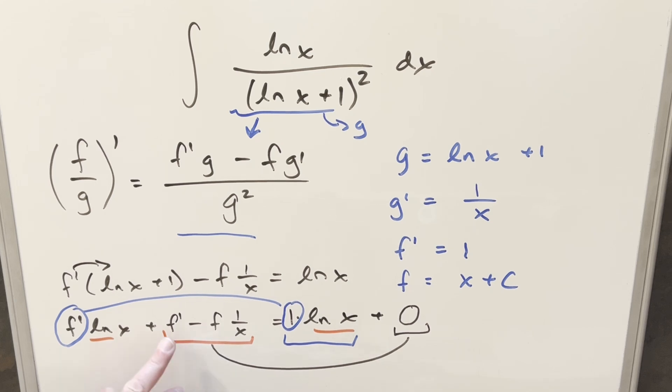Now we have it set up where this part works. We have 1 times ln x here. For this second part, for this to be 0, we know f prime is going to be 1 minus our f, x plus c times 1 over x. But then you'll notice really what's going to work is when c is 0.